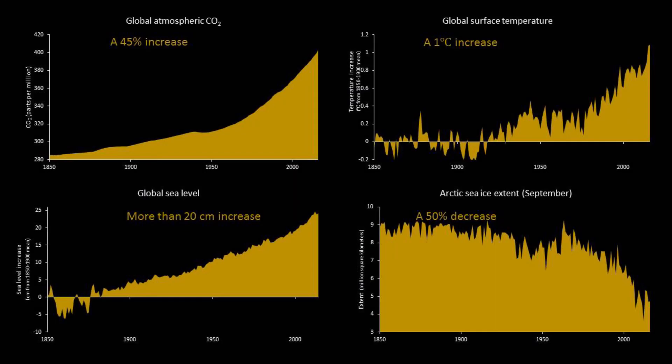When that sea ice melts, because it's already floating, it doesn't raise sea levels, but change on that scale can alter weather patterns across North America, Asia, and Europe. And so together we're starting to get an idea of a dashboard of planetary vital signs and how they're changing.